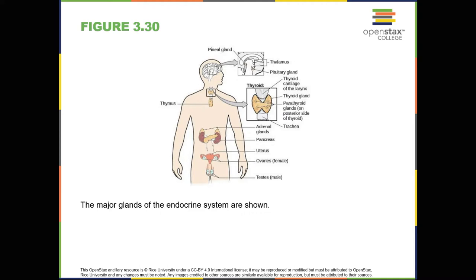Located in the neck, the thyroid gland releases hormones that regulate growth, metabolism, and appetite. In hyperthyroidism, or Graves' disease, the thyroid secretes too much of the hormone thyroxine, causing agitation, bulging eyes, and weight loss. In hypothyroidism, reduced hormone levels cause sufferers to experience tiredness, and they often complain of feeling cold. Fortunately, thyroid disorders are often treatable with medications that help re-establish a balance in the hormones secreted by the thyroid.